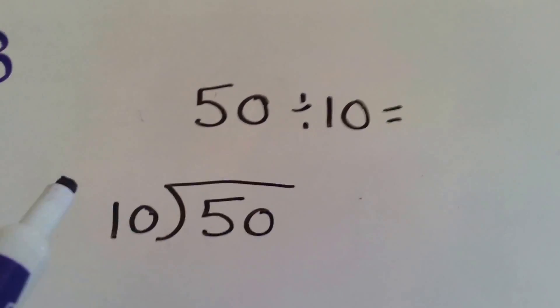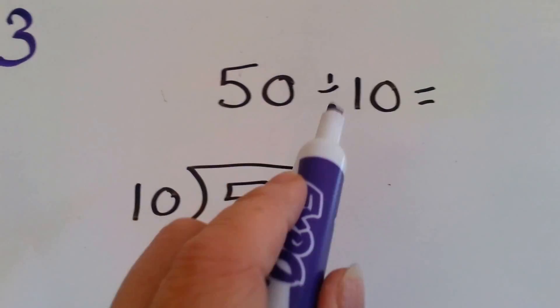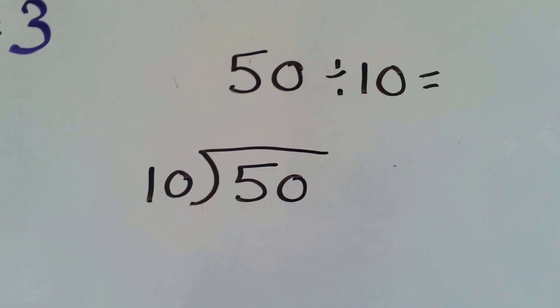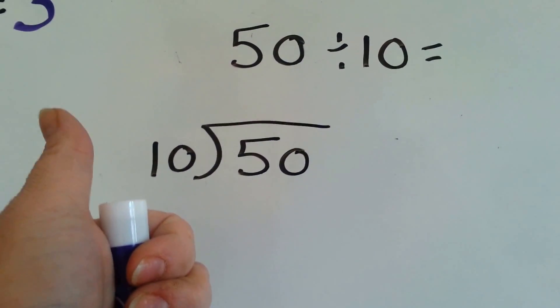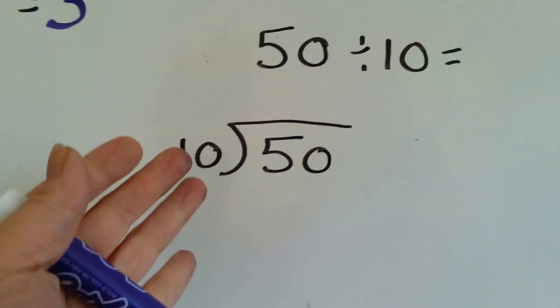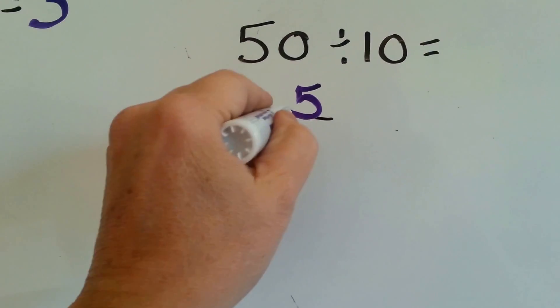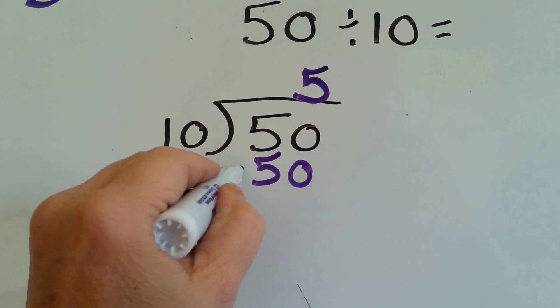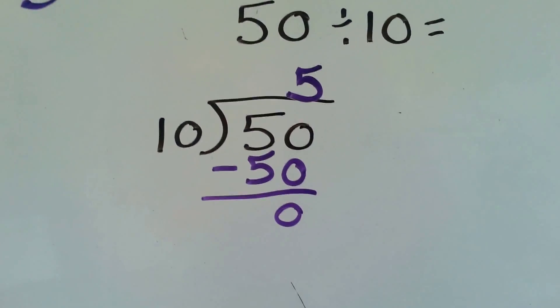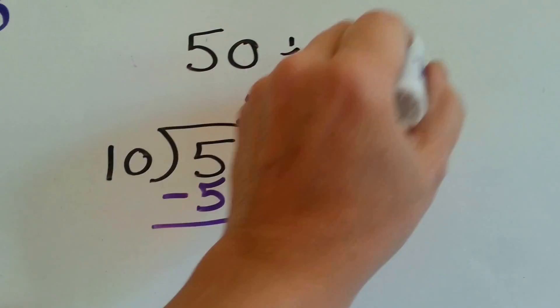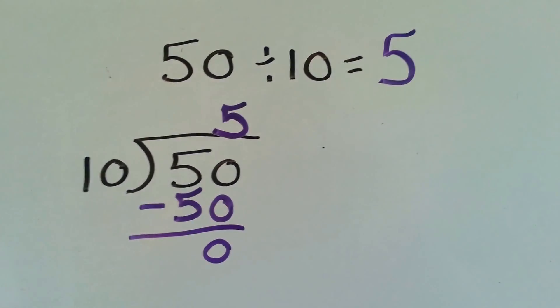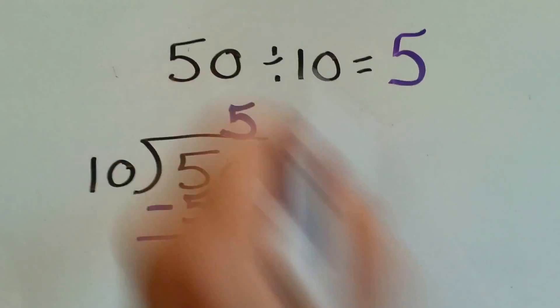How about this one? 50 divided by 10. How many times can 10 fit into a 50? 10, 20, 30, 40, 50. 5. 5 times. 10 times 5 is 50. We do our subtraction and we get 0. 50 divided by 10 is 5. 5 times 10 is 50.